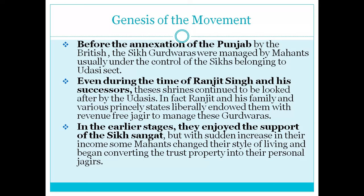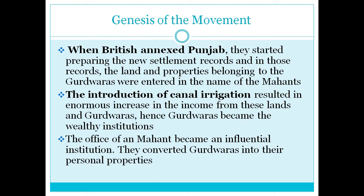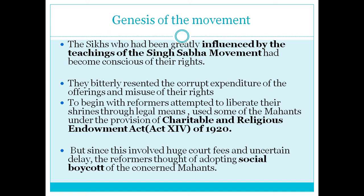When the British made new land records, Gurdwara properties were being recorded in the names of the Mahants. After canal irrigation was introduced, Gurdwaras became wealthy institutions and Mahants became influential — they converted Gurdwaras into their personal properties. The movement was also influenced by the Singh Sabha Movement, which had given the community solidarity and consolidation. However, regarding political rights, it had not been able to deliver them, which is why the Gurdwara Reform Movement was started as a separate movement from the Singh Sabha Movement.